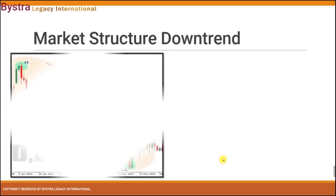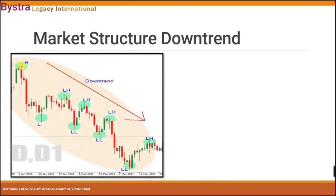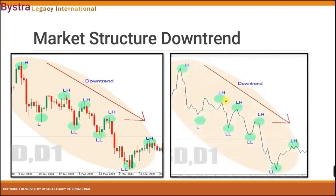Now let's look at the downtrend. So in the MT4 chart, this is how the downtrend looks like — the high, low, lower high, lower low, lower high, lower low. And let's look at the line chart. Same thing that happens for downtrend: the high, the low, you can mark this as your lower high, lower high, this as your lower low, lower low. This is your lower high, lower low, lower high, and lower low, and it continues. As long as it's moving in a downtrend, we should have this structure: high, low, lower high, and lower low.